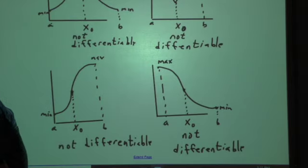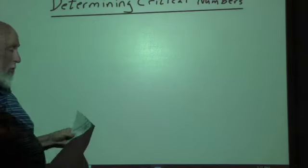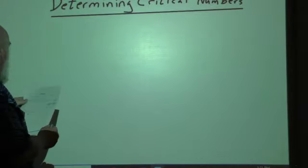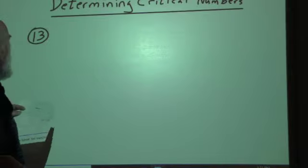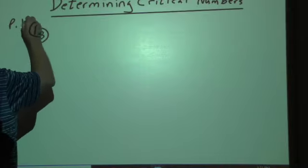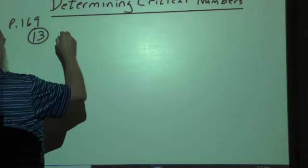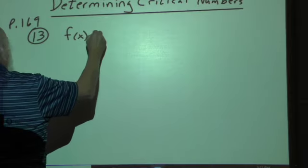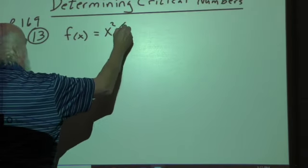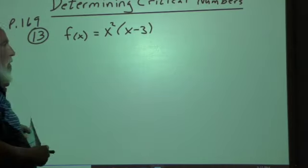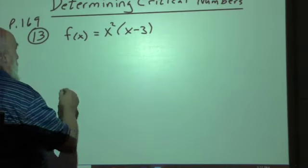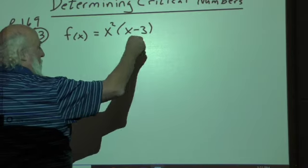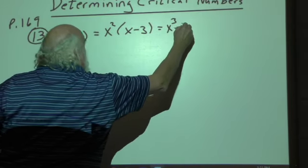So let's take a look at how we can calculate this. We're going to determine some critical numbers. Now, in your textbook, let me take a look at what you're looking at. This is on page 169. And so the function of x is equal to x squared times x minus 3. And so what we want to do is we want to find the derivative at the point where it's going to be 0 for a critical point. So I'm going to rewrite this to be x cubed minus 3x squared.